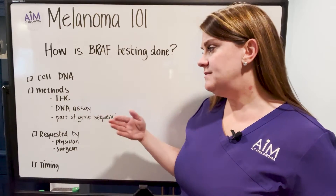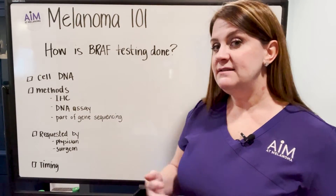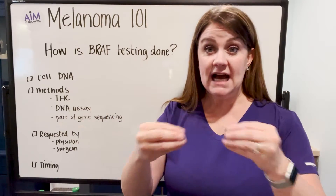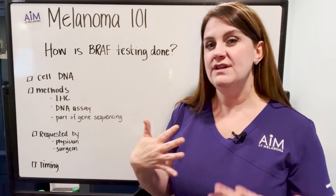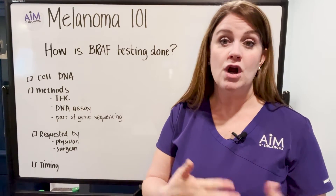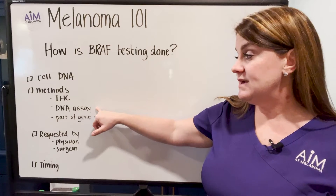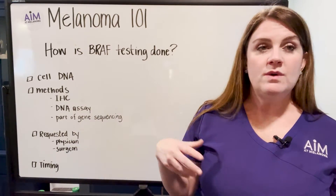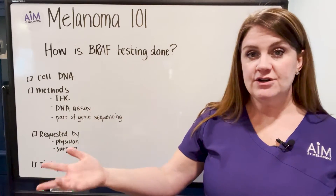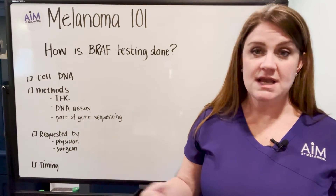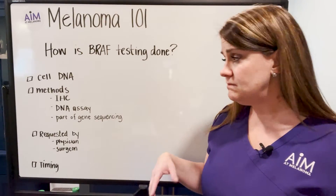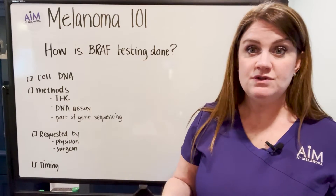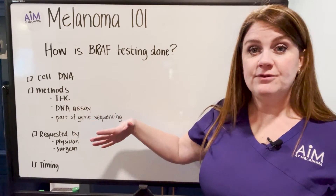IHC can be done, but most often DNA assay or gene sequencing to look at the entire profile of genetic mutations in a tumor are the methods seen more commonly. You can do a DNA assay that's testing just for the BRAF mutation, and that will tell you whether or not you have BRAF V600E, BRAF V600K, or some other type of BRAF mutation — or tell you if you are BRAF wild type, where you do not have the mutation.